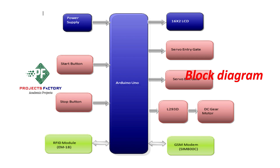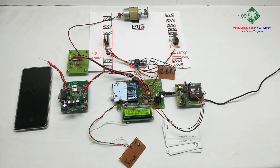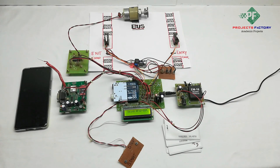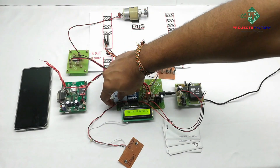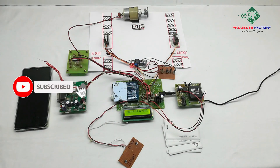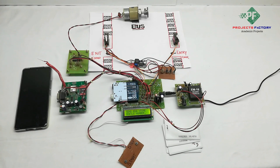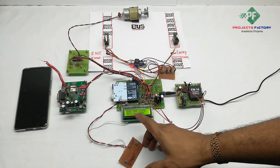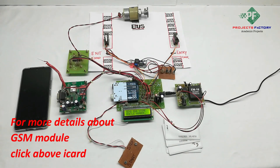Now we power on the project. After powering on, we have to wait two to three minutes for the GSM signal. Once the GSM signal is obtained, we reset the Arduino controller. The LCD then prompts us to send a message to store the mobile number. We send a star followed by the mobile number via SMS to the GSM modem.